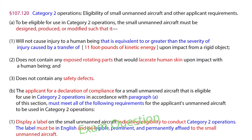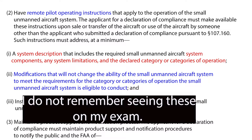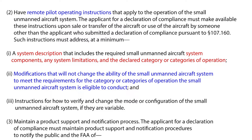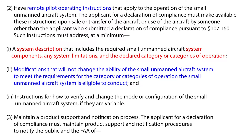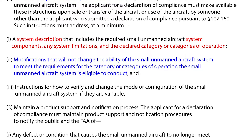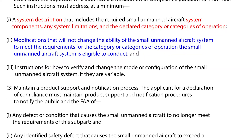You have to display a label on the small unmanned aircraft indicating eligibility to conduct Category 2 operations. The label must be in English, legible, prominent, and permanently affixed to the aircraft. You also have to have remote operating instructions that apply to the operation of the small unmanned aircraft system. The applicant for a declaration of compliance must make these instructions available upon sale or transfer of the aircraft or use by someone other than the applicant, pursuant to 107.160. Instructions must address, at a minimum: a description of the aircraft system components, any system limitations, the declared category or categories of operation, any modifications made to the aircraft, and instructions for how to verify and change the mode or configuration of the aircraft.